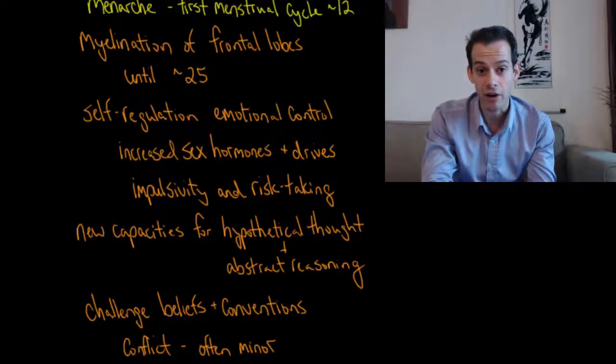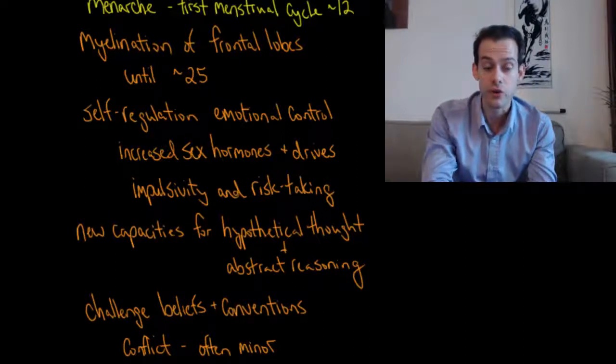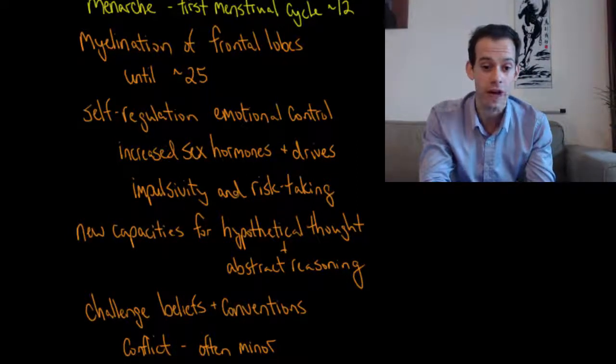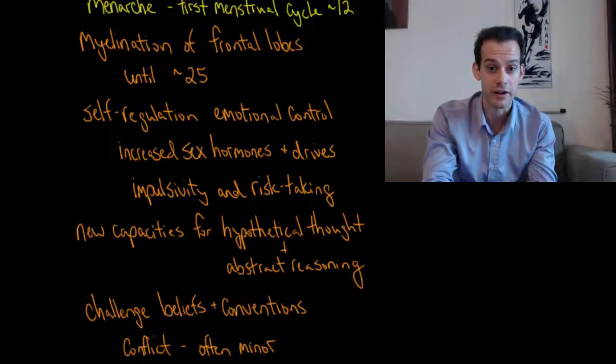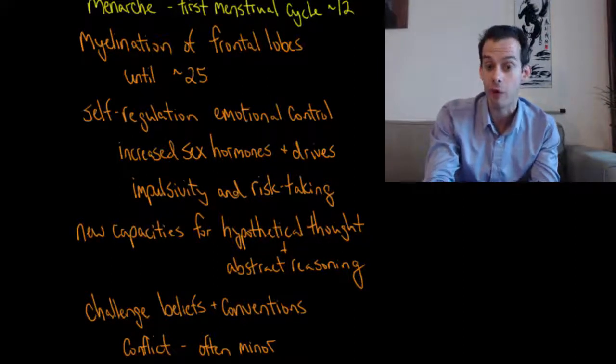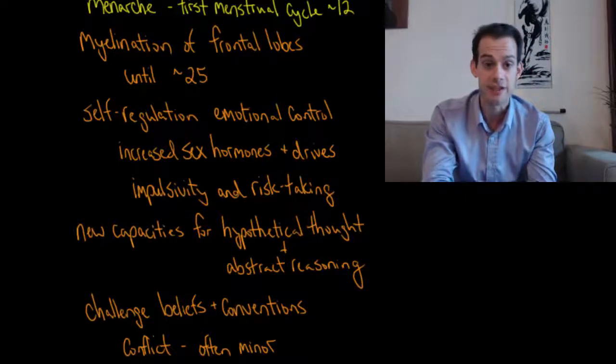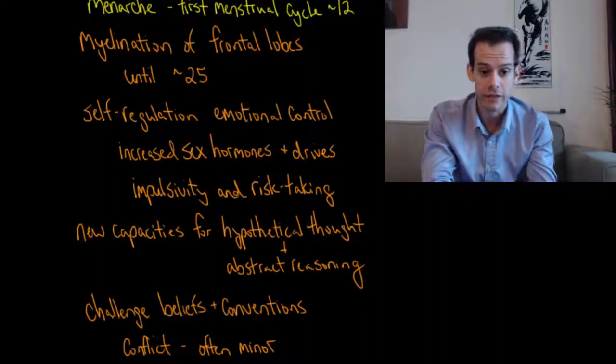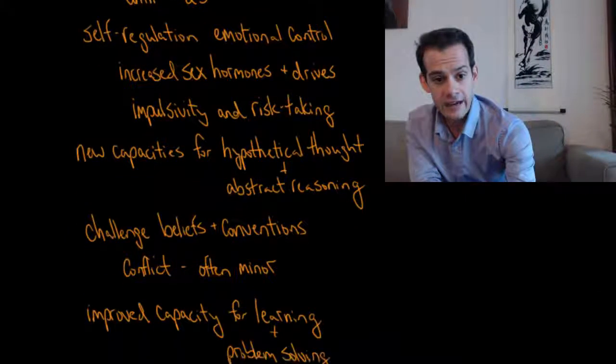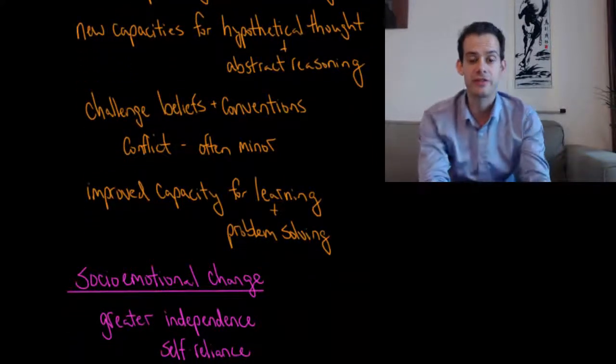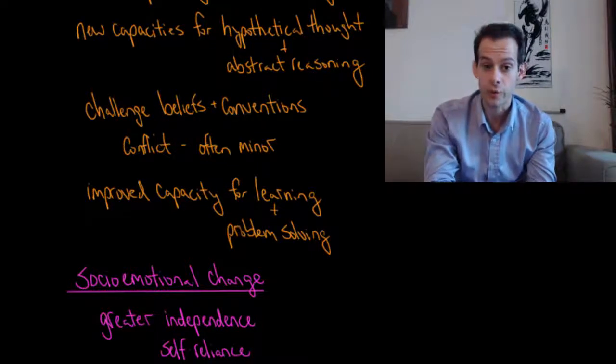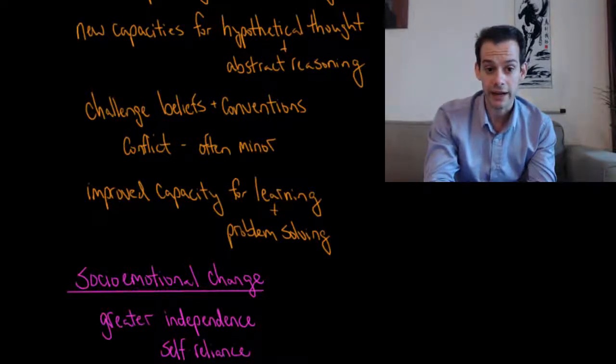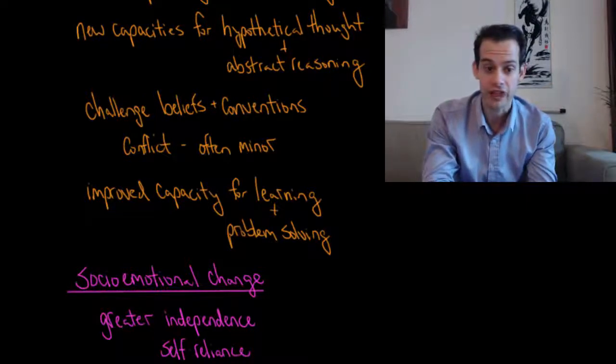This change in our cognitive development is also associated with new capacities for hypothetical thought and for abstract reasoning. This should remind you of Piaget's theory of cognitive development and the formal operational stage, which begins sometime around age 11 or 12. Adolescents have new capacities in these areas. They're able to think hypothetically and do inferential reasoning that they weren't doing before. This might be related to their tendency to challenge beliefs and conventions of their society.